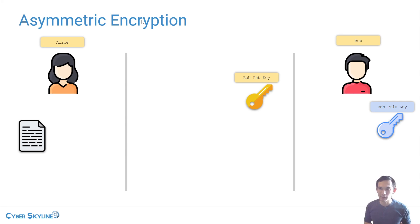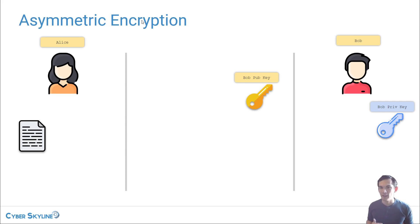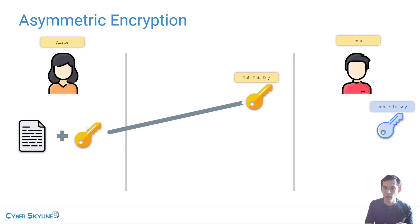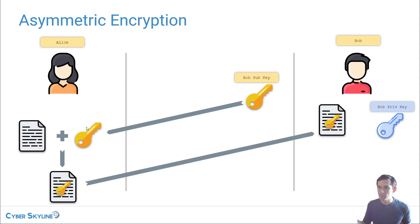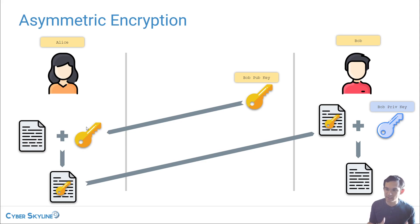Let's create a hypothetical scenario where Bob is a reporter and Alice has some juicy tip. She wants to send this information to Bob and make sure no one else can know about it. The way asymmetric key encryption works is that Alice takes Bob's public key, runs her message through the encryption function, and sends the encrypted message to Bob. Bob then uses his private key to decrypt it — only Bob's private key can decrypt a message encrypted with his public key.